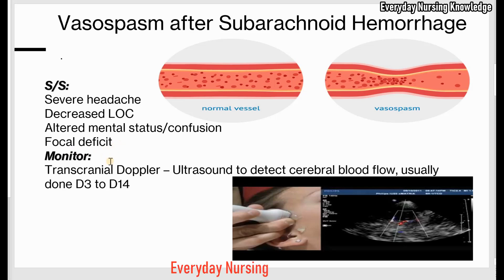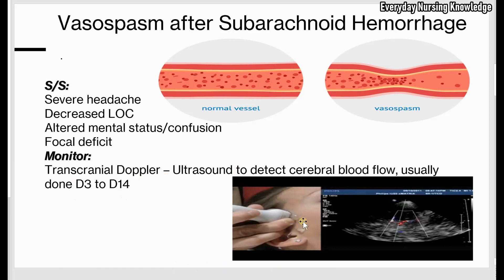How will you monitor for vasospasm? For a patient with subarachnoid hemorrhage, a transcranial doppler is ordered from day 3 to day 14. Transcranial doppler is an ultrasound used to detect cerebral blood flow — or blood flow to the brain — and it helps to detect or rule out vasospasm.